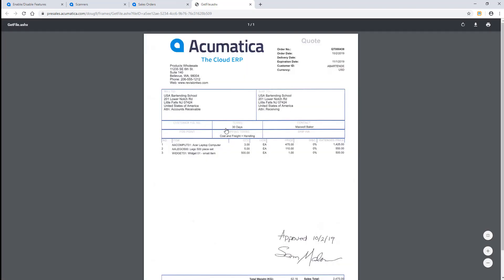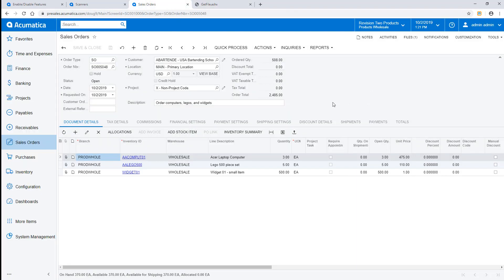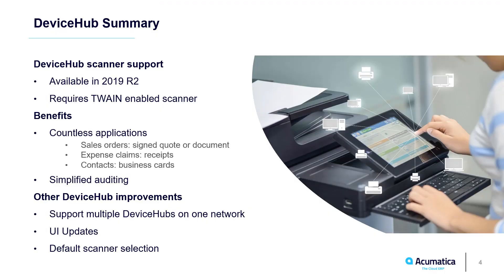In this example, I scan to a document, but I can also attach files to line items on my data entry screens. There are countless applications. I can attach vendor bills to AP bills, signature pages to sales orders, receipts to expense claims, packing lists to purchase receipts, and business cards to contacts.